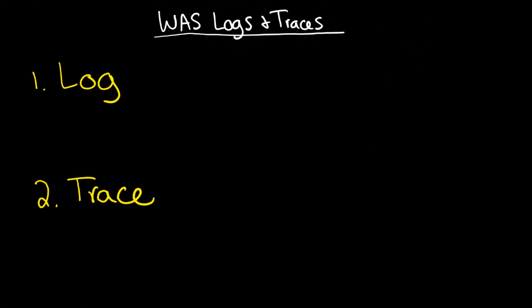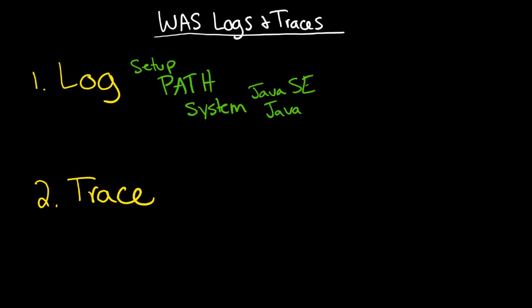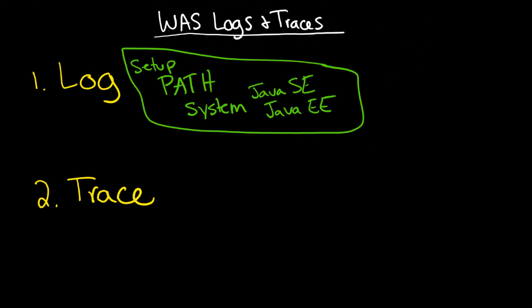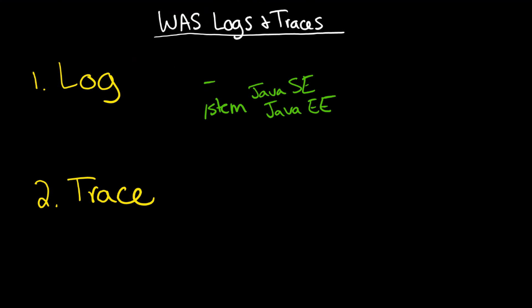What is a log? A log is essentially configuration — setup information. It tells you the path where the log files will be located and what will actually be in that log. Much of this is related to system output — the regular system output from Java SE — and separately the Java EE information: where it is on the file system, meaning the path, and what would be in it by default.